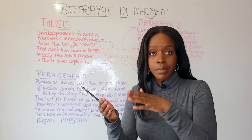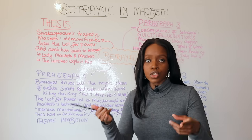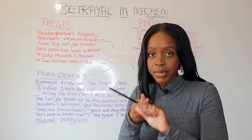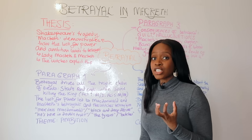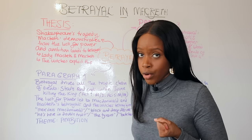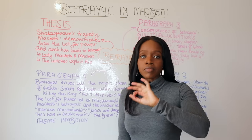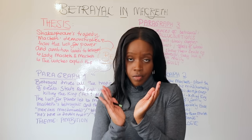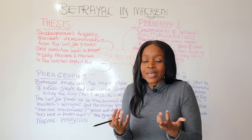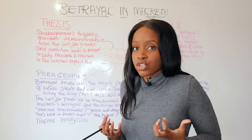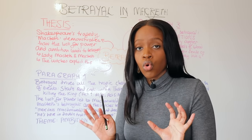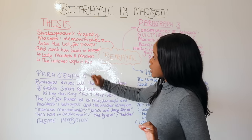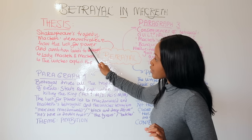This drives Macbeth and Lady Macbeth to commit all of these murders — the death of King Duncan, the death of Banquo, and the death of Macduff's family. Shakespeare is saying that it's a terrible thing to be ambitious, to want to go above your position on the natural hierarchy, because all this will do is inspire a spirit of betrayal and corrupt you as an individual.